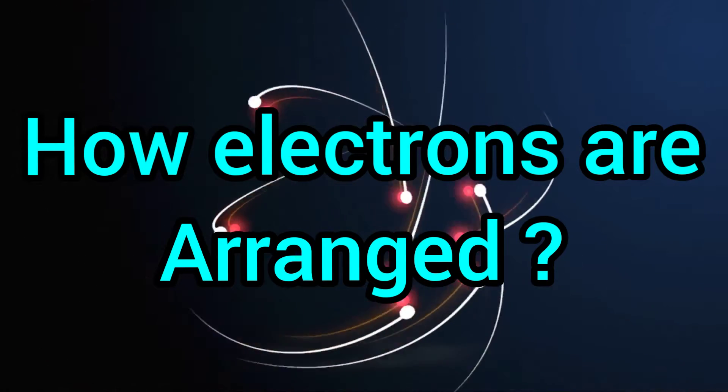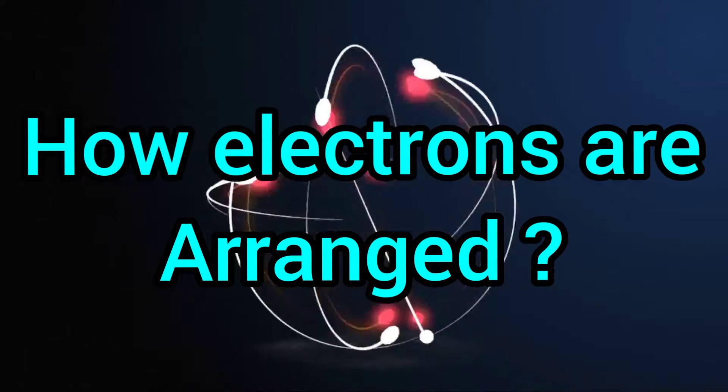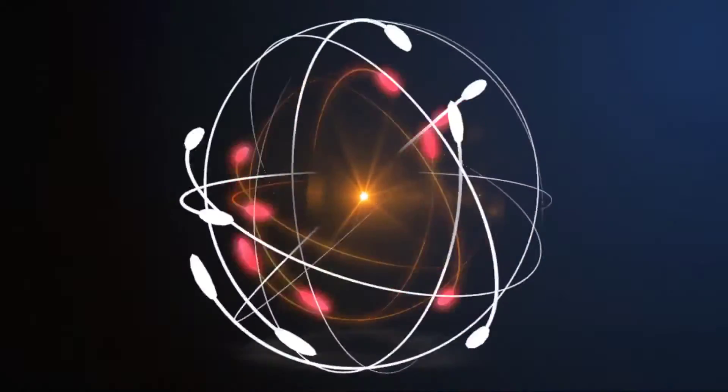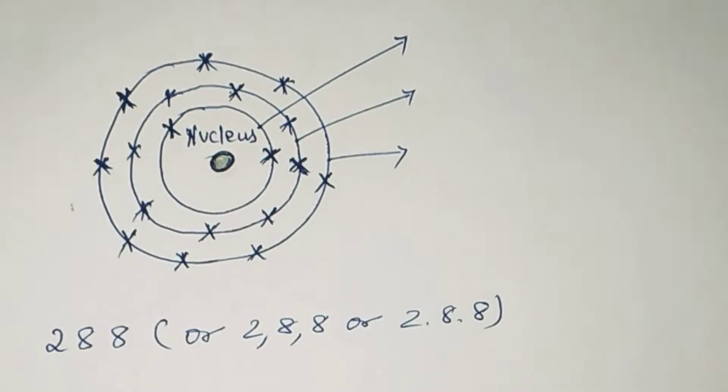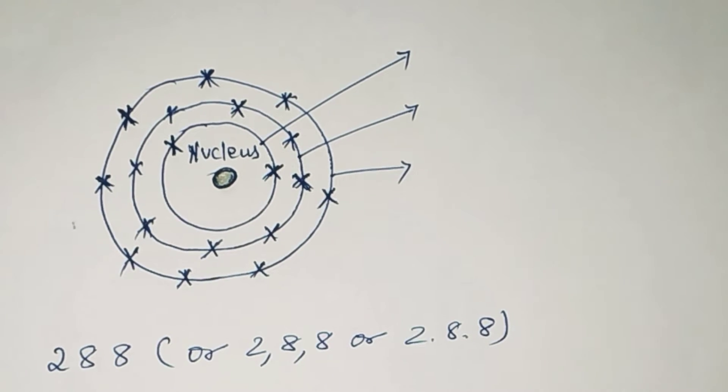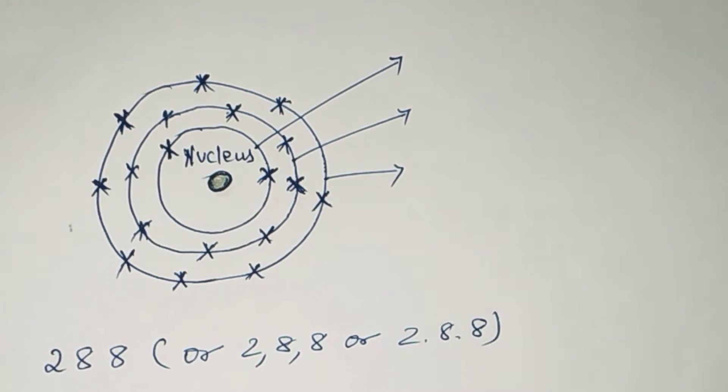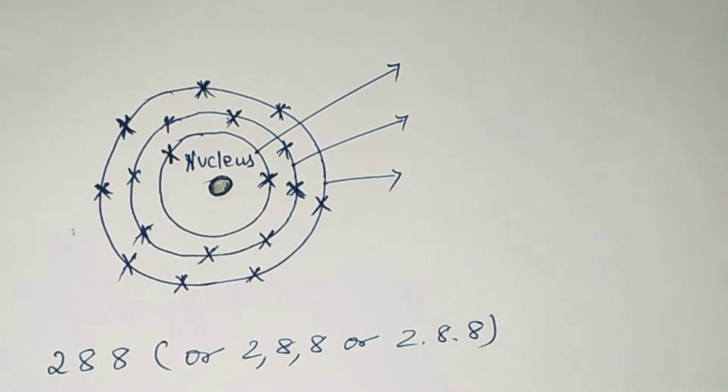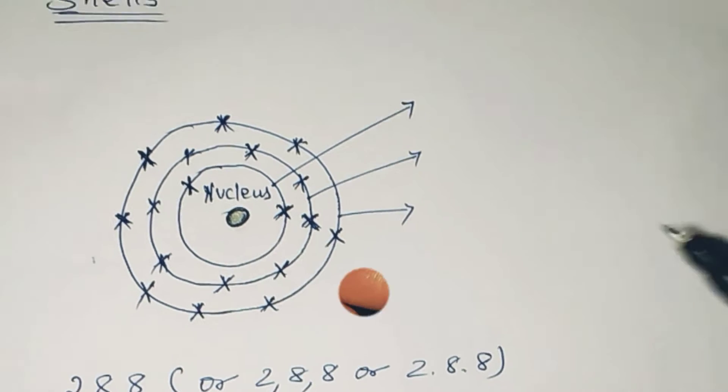Hi guys, before we start, don't forget to subscribe for more videos. So how are electrons arranged? Electrons are arranged in shells around the nucleus. What is a shell?